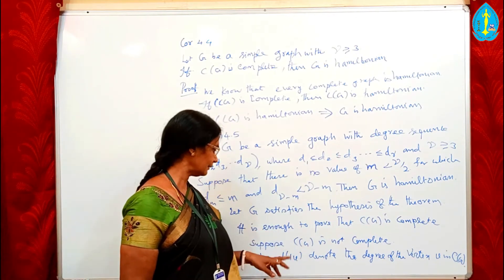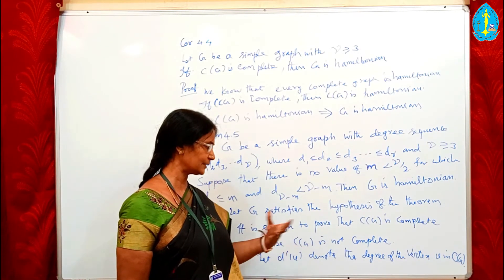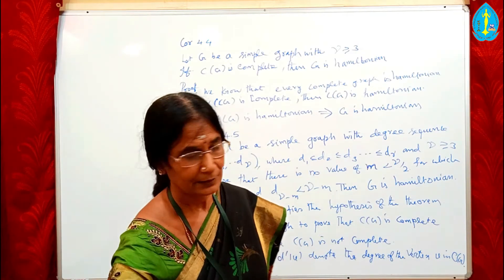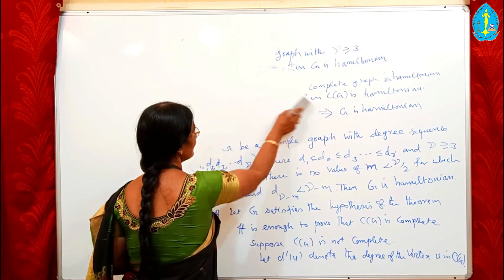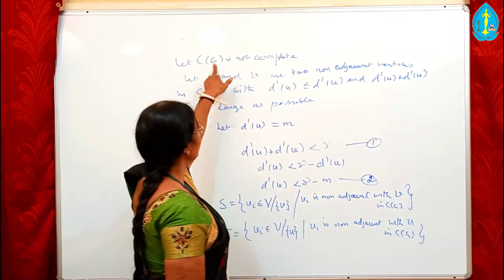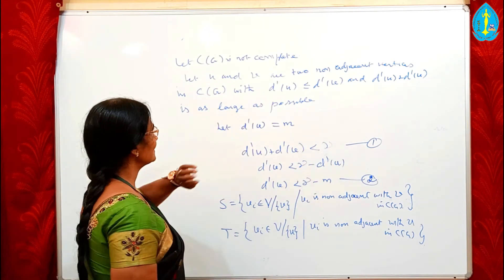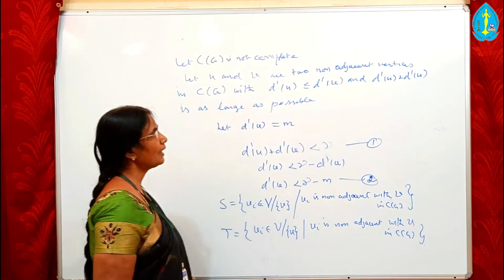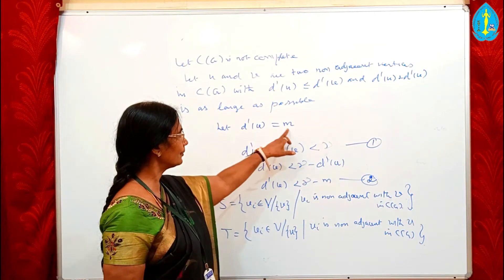The proof is given by contradiction. Suppose C(G) is not complete. Then at least one pair of non-adjacent vertices exists in C(G). Let D'(V) denote the degree of vertex V in C(G), while D(V) denotes the degree in G. Let U and V be any two non-adjacent vertices in C(G) such that D'(U) ≤ D'(V) and D'(U) + D'(V) is as large as possible. Let D'(U) = M.